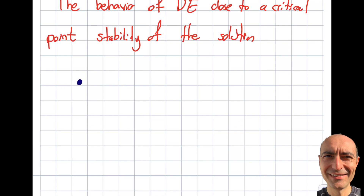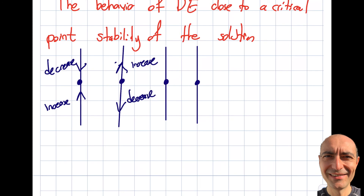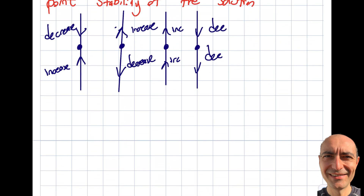Let's plot the possible cases around a critical point. I can have four possible cases. Case one: decreasing on both sides pointing toward the critical point. Case two: increasing on both sides pointing away. Case three: one side increasing, one side decreasing — both pointing toward. Case four: both pointing away. Or in the middle cases, both arrows in the same direction — both increasing or both decreasing.